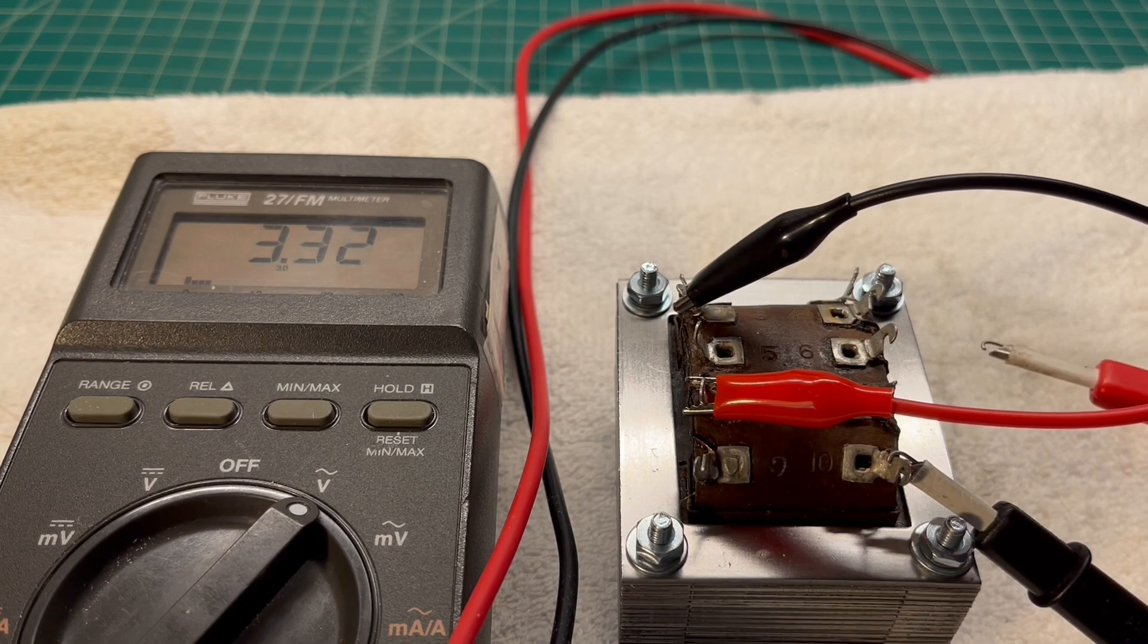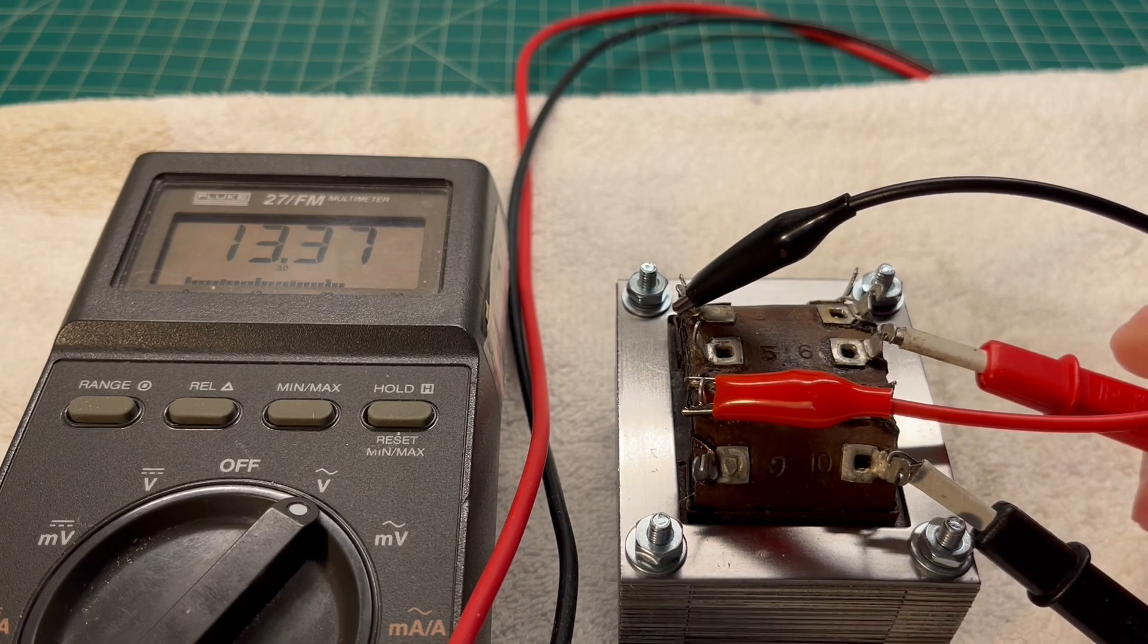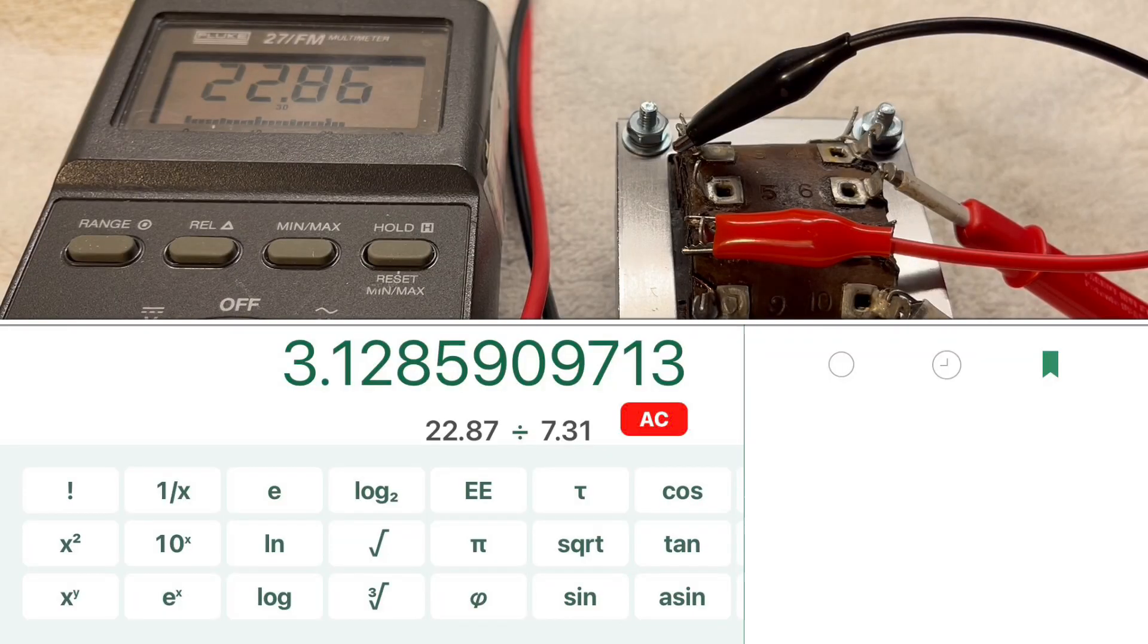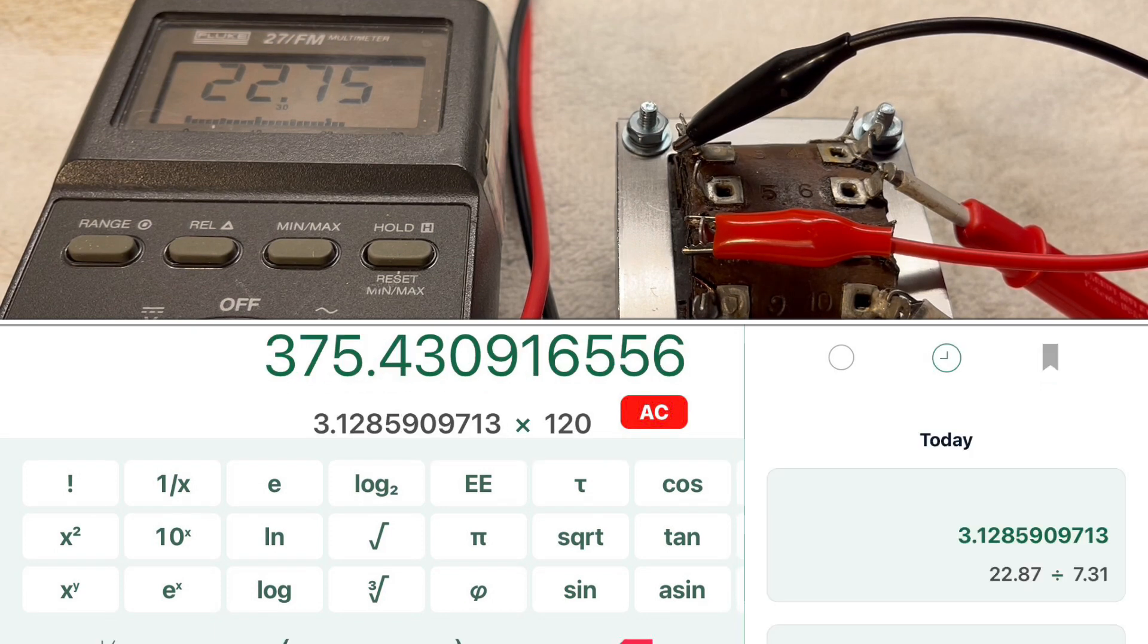Let's go to the center tap location. You can see we're at 22.87. Take the 22.87, divide that by the input voltage of 7.31, and that gives us a turns ratio of 3.1285 times 120. You can see that puts the plate to center tap around 375.43 volts.